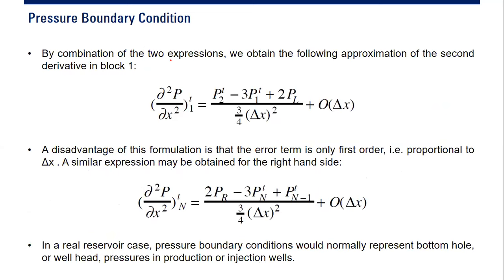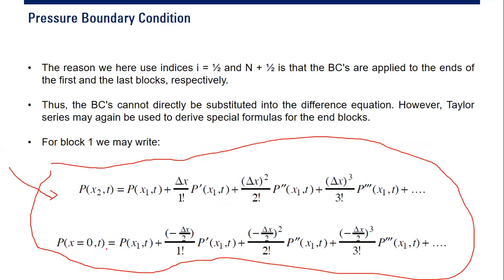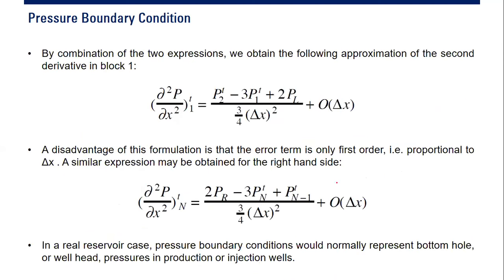We use index i equals one-half because the data used corresponds to the central point. The central point is at delta x divided by 2 from the boundary — that's why we use i equals one-half. Combining the two expressions, we obtain the following approximation of the second derivative. A disadvantage of this formulation is that the error term is quite large — proportional to delta x. A similar expression may be obtained for the right-hand side, also with order delta x.